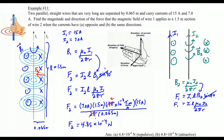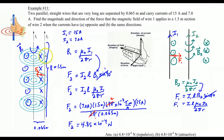To determine the direction of the force on wire 1: your fingers point out of the screen in the direction of B₂, your thumb points straight up, and your palm will face to the right — so the force on wire 1 acts to the right. This force is of equal magnitude to F₂ but in the opposite direction. So when two wires carry current in the same direction, the forces are attractive.